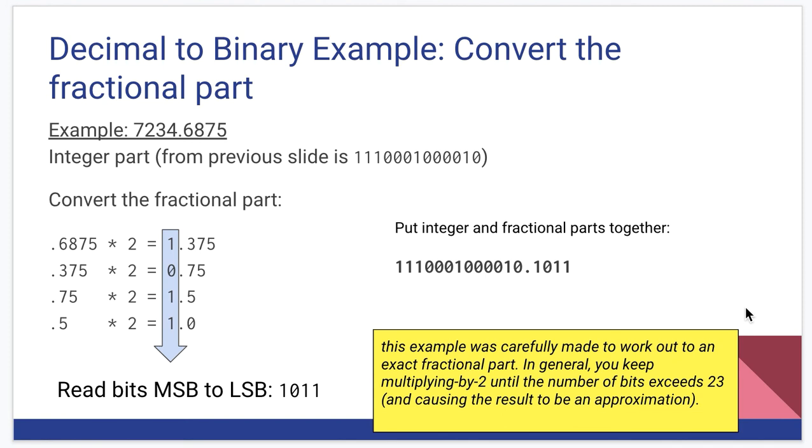Pay attention to this side box here. This example was made to work out nicely at 4 bits. In general, you're going to repeat this process however many times it takes to where you get 24 bits of precision, counting those you pulled in from the integer. Once you have those 24 bits of precision, you stop, and there still may be decimal parts that you haven't accounted for. That's where the approximation comes in. Eventually, we just have to stop approximating it as powers of 2 and hope for the best.